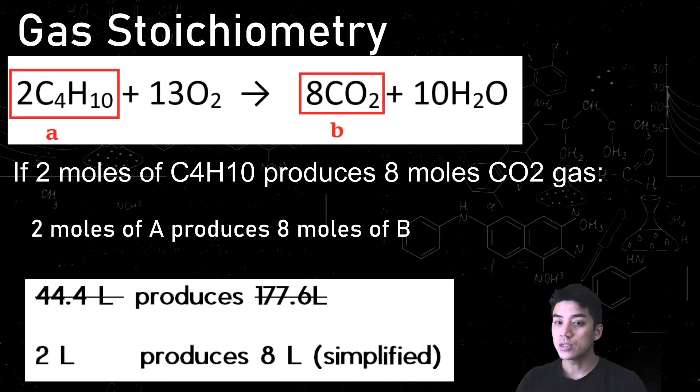We've got a balanced equation: 2 C4H10 plus 13 oxygens yields 8 carbon dioxides and 10 molecules of water. So I've boxed my reactant and my product. If 2 moles of C4H10 are used in the experiment, it's going to produce 8 moles of CO2 gas. That's what the balanced equation will tell us. So 2 moles of A will produce 8 moles of B.